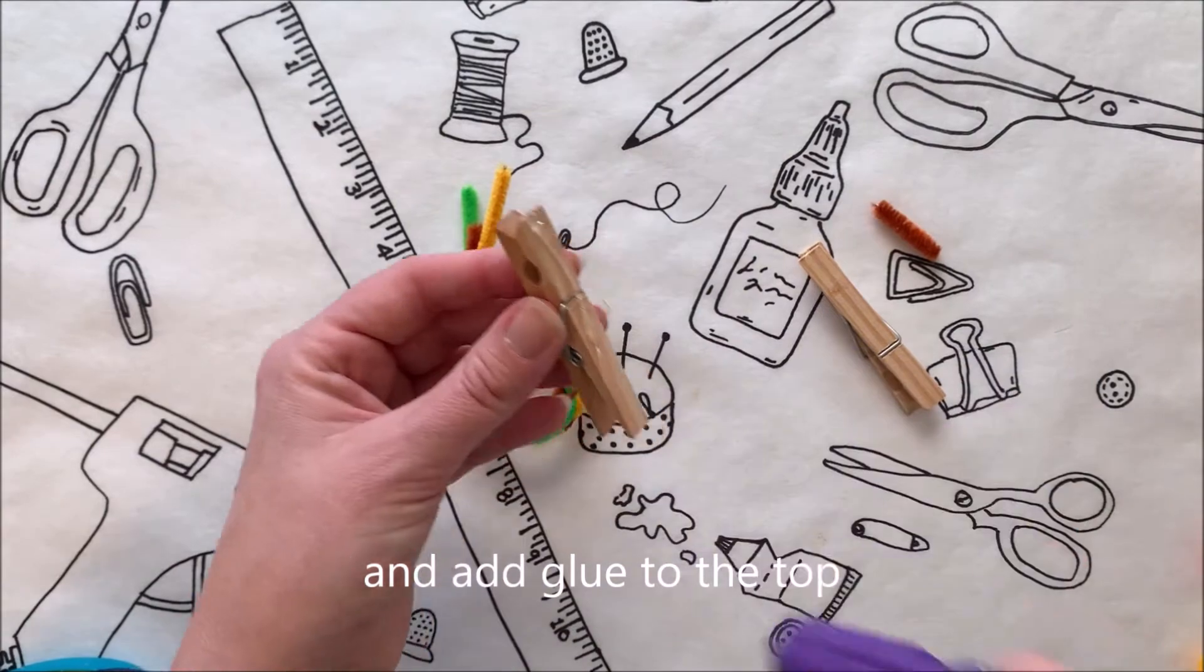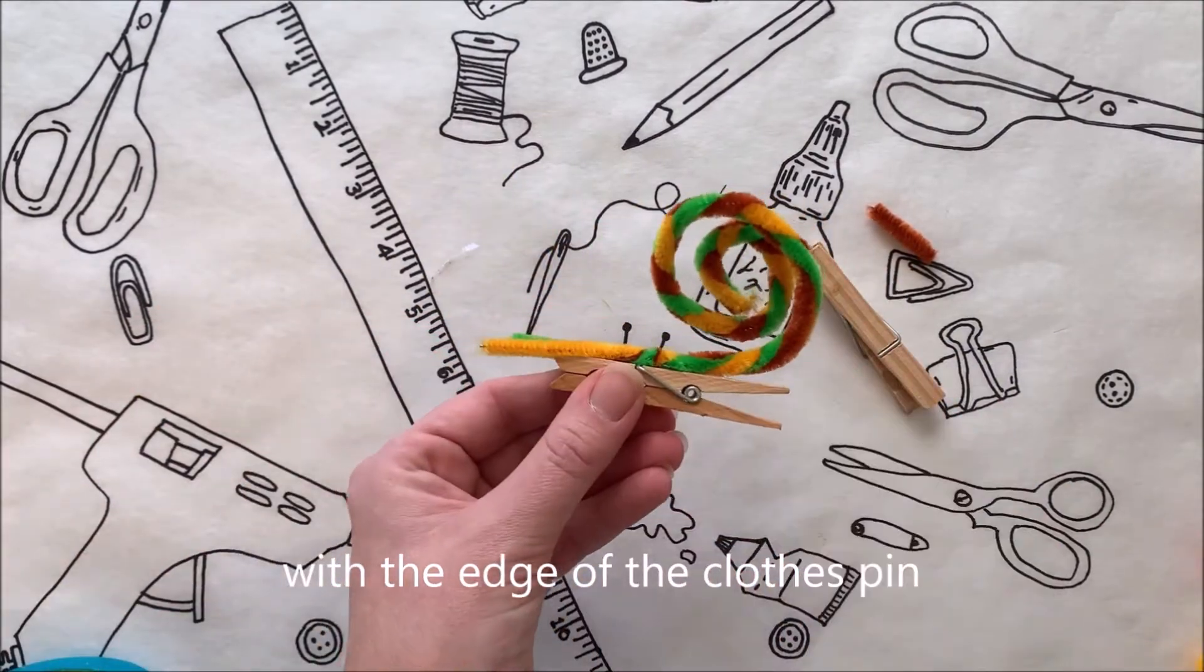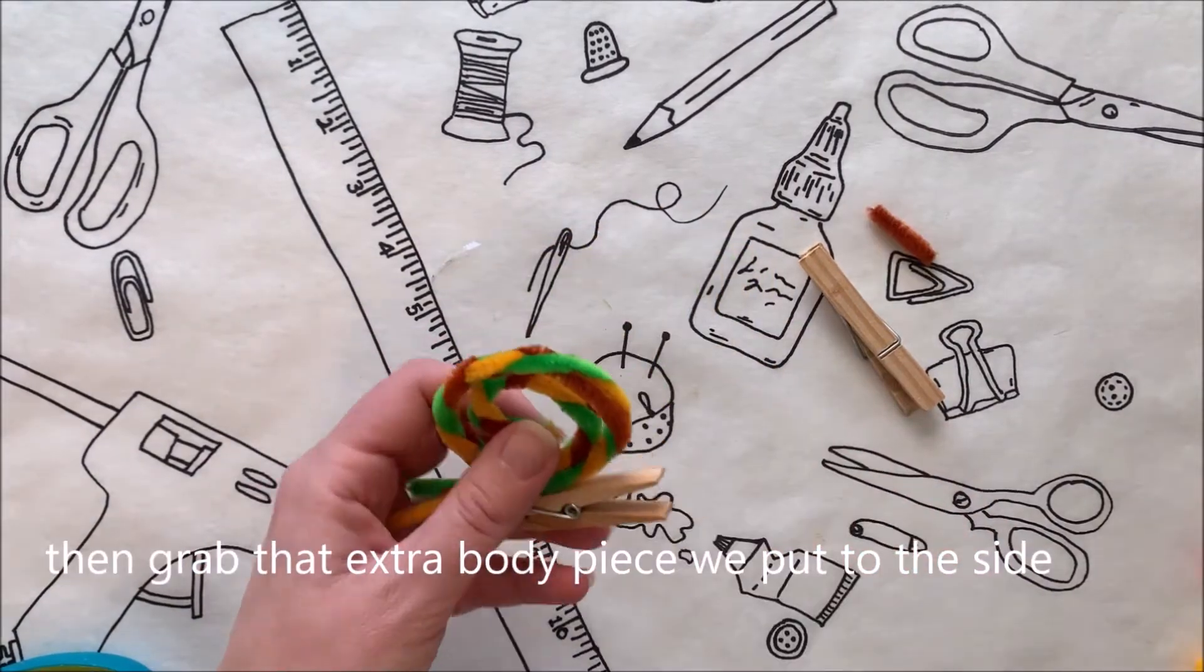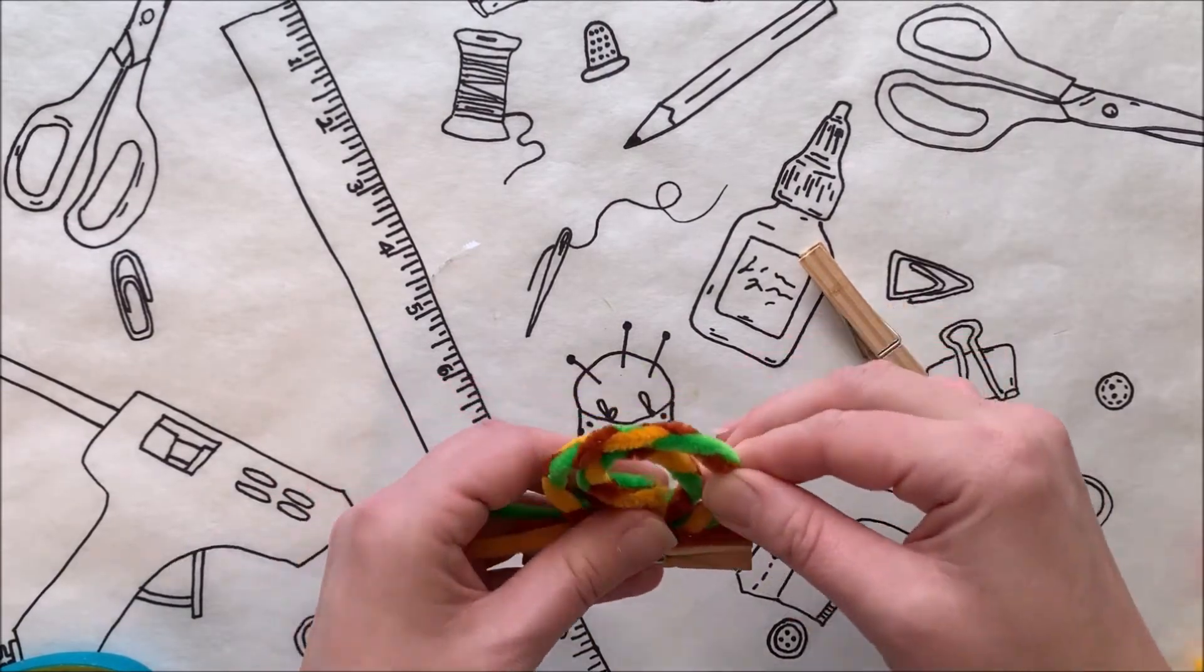Grab a clothespin and add glue to the top and attach the snail body, lining the top of the shorter middle piece with the edge of the clothespin. Now bend the two remaining pipe cleaners. Then grab that extra piece we put to the side, add a dab of glue to the back end and attach the remaining piece to the top of the pin.